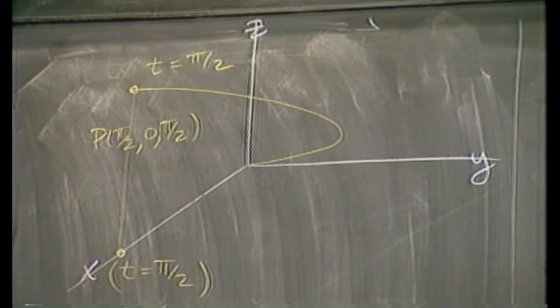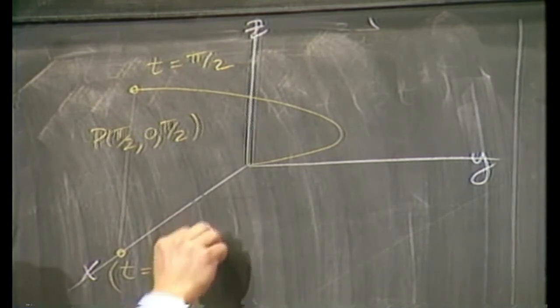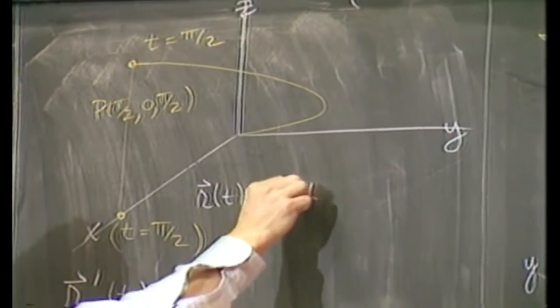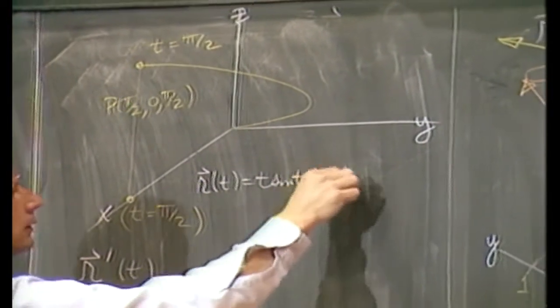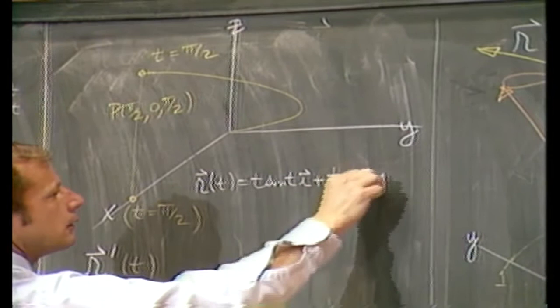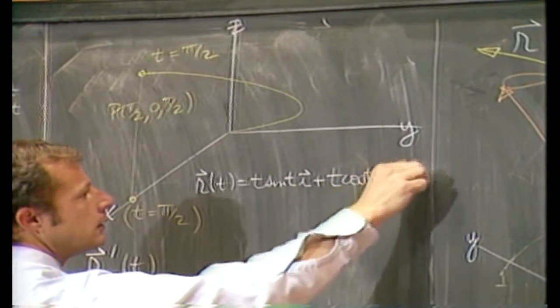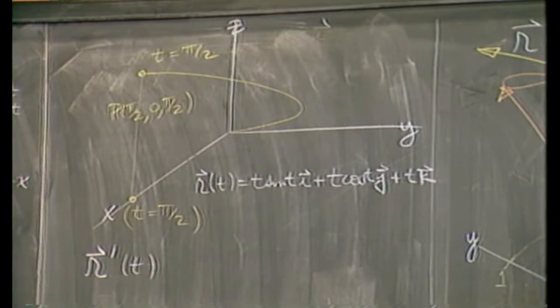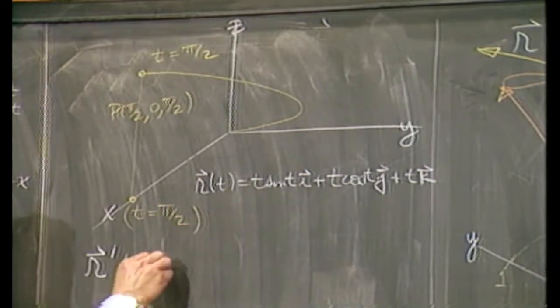So there's that lifting spiral I was talking about. What we are supposed to do is investigate r prime at π/2. Well, r prime... I better copy r down again. r prime... I'm going to have to use some of your fancy calc 1 product rules, but that's about it.